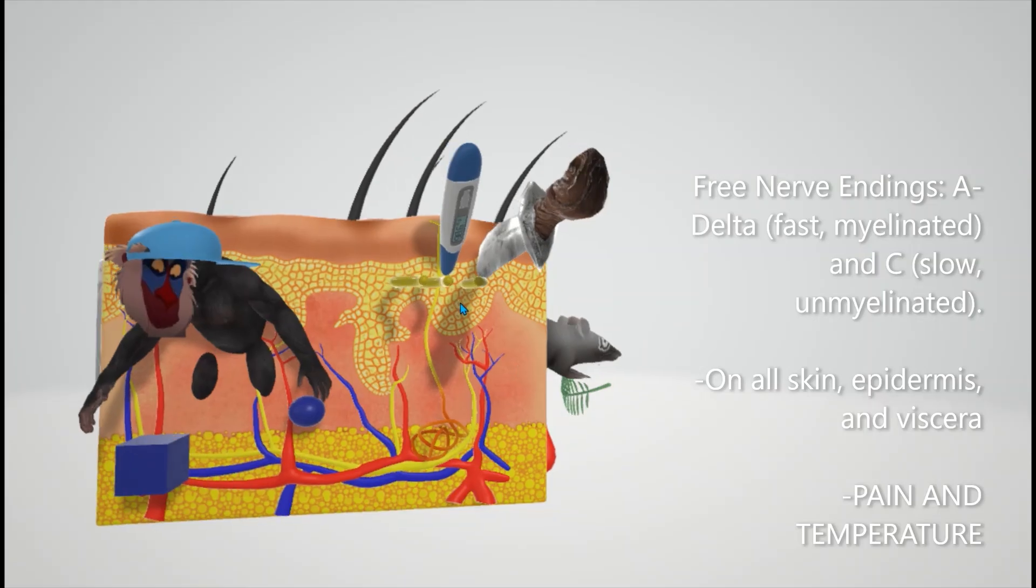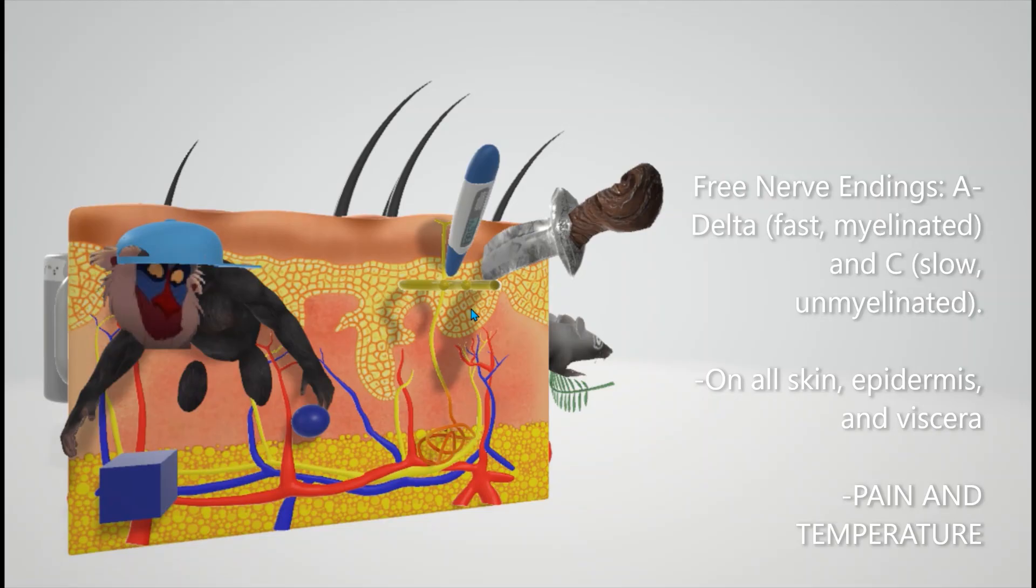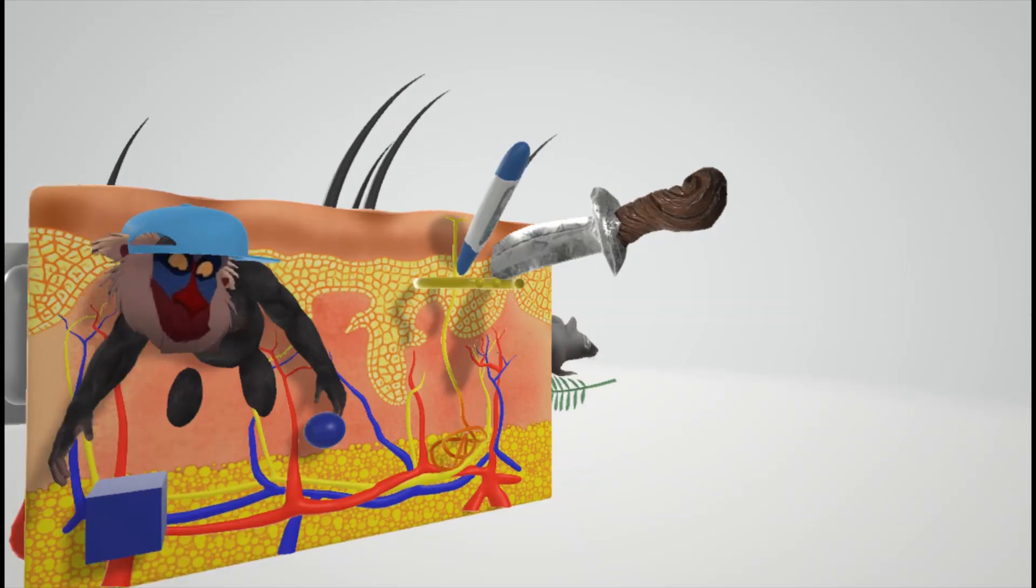It's located in all skin, epidermis, and some viscera. And there are different types. There's A delta for fast myelinated fibers, C for slow unmyelinated, but I didn't put that in the video.